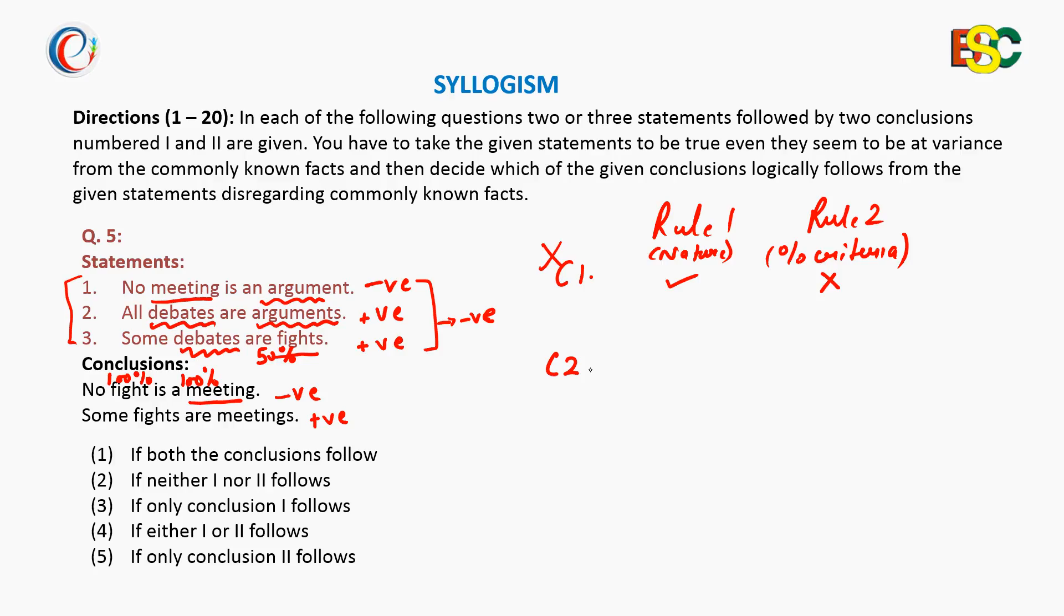Checking conclusion 2, it is some fights are meetings, which again can be concluded from statements 1 and 3 as predicate and subject are present in 1 and 3 with adding word making connection from 1 to 3. But statements negative, negative, positive will conclude negative conclusion and it is positive in nature. So rule 1 is not followed here and thus conclusion 2 is not followed.